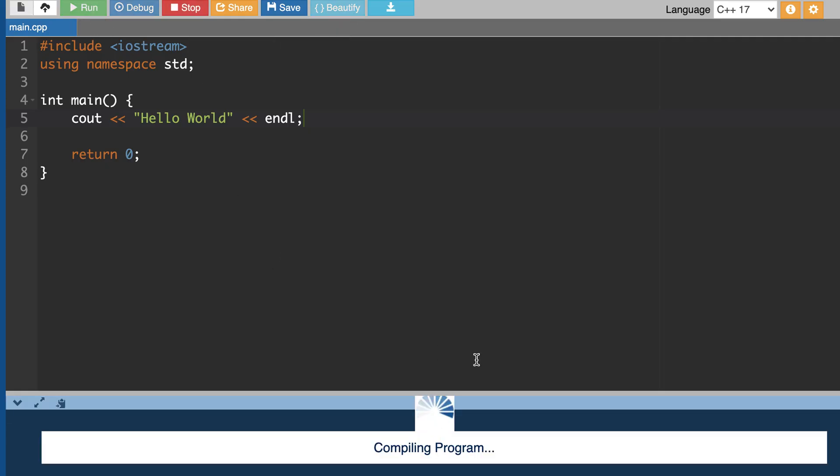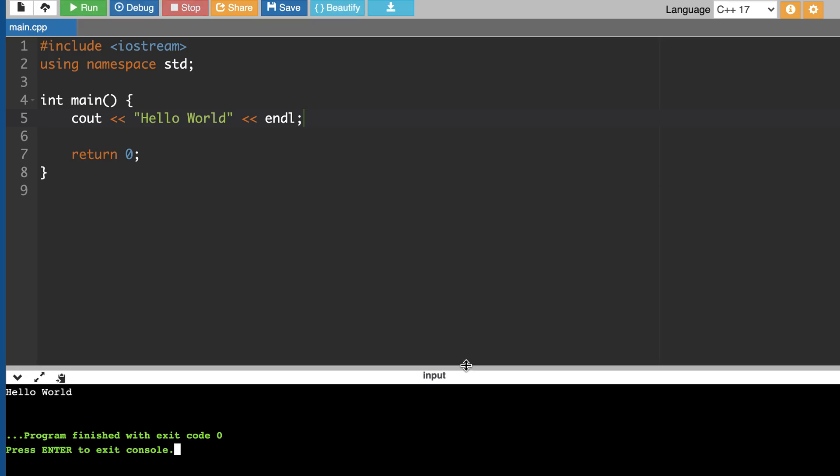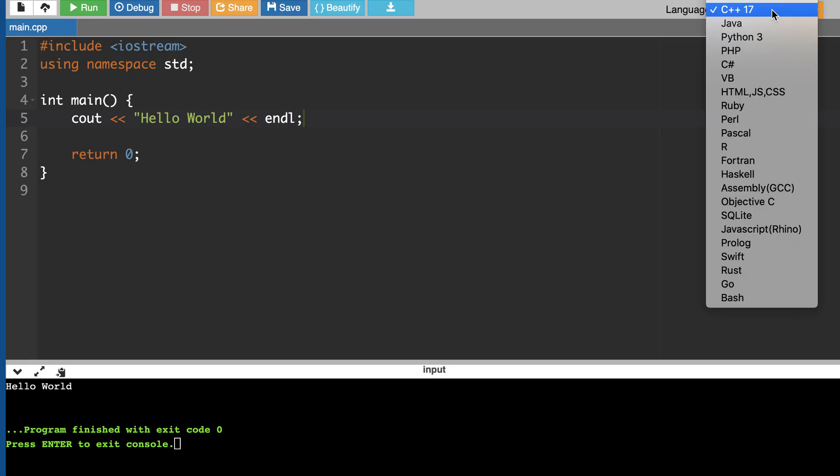If we run it, we get output here at the console. You can also change the language—you can have C++ 17, 14 or older versions, but I would recommend using C++ 17 or the latest version you are comfortable with.